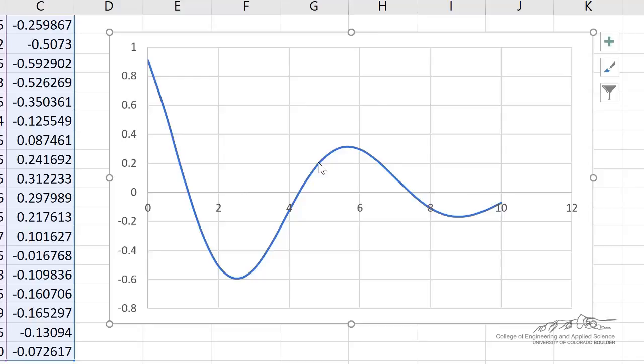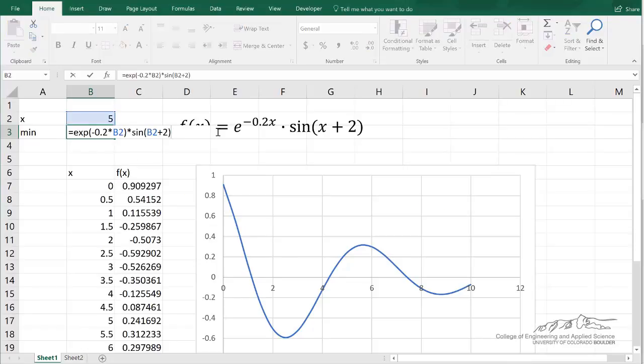Now, the minimum is going to be here at about 2.5. The maximum, depending upon how we do things, could either be here at about 5.5, or it might find the maximum at 0, which is the lower end of our domain. So I typed in my function referencing the x. And right now, at a value of 5, we are calculating 0.24.